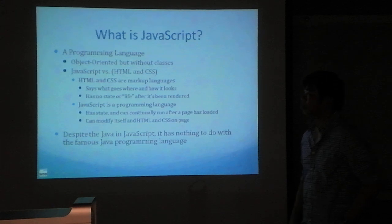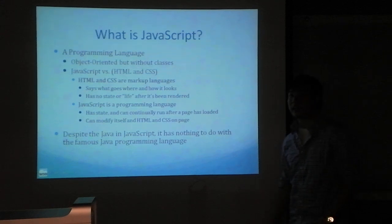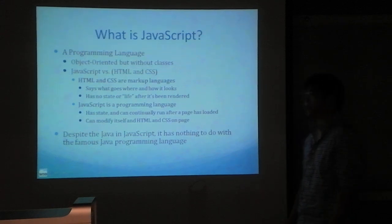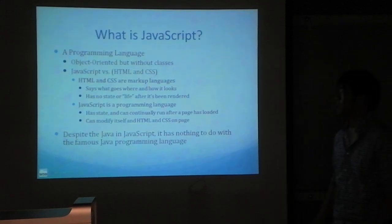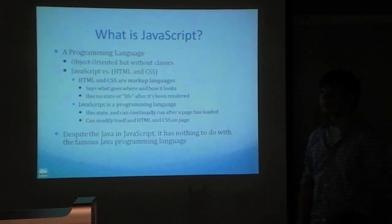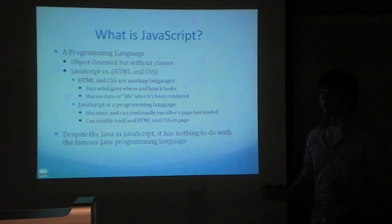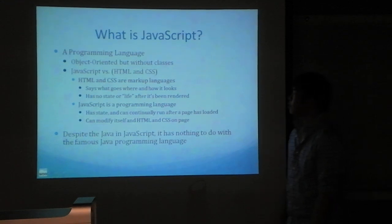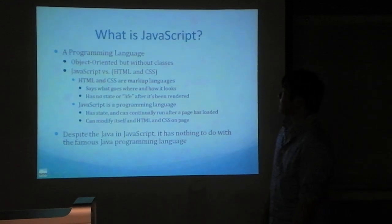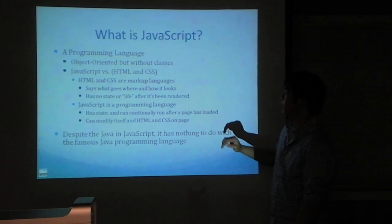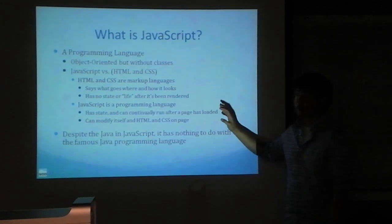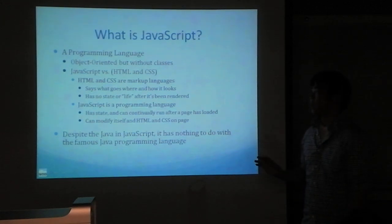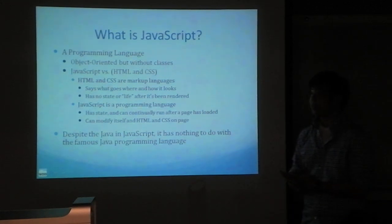What is JavaScript? JavaScript is a programming language — it's object-oriented, but without classes, which is kind of weird. JavaScript is not a markup language; it is a programming language. Compared to HTML and CSS, which are strictly markup languages and static, with JavaScript we're able to create dynamic pages.